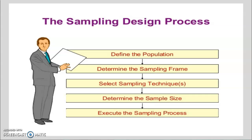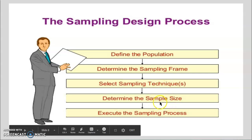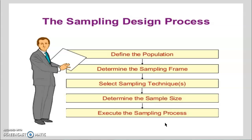The sampling process includes a few steps. First, define the population. Second, determine the sampling frame — make a list of the population. Third, select the sampling technique you are going to use. Fourth, determine the sample size. Finally, execute the sampling process. So the sampling process involves defining the population, determining the sampling frame, selecting the sampling technique, determining the sample size, and executing the sampling process.